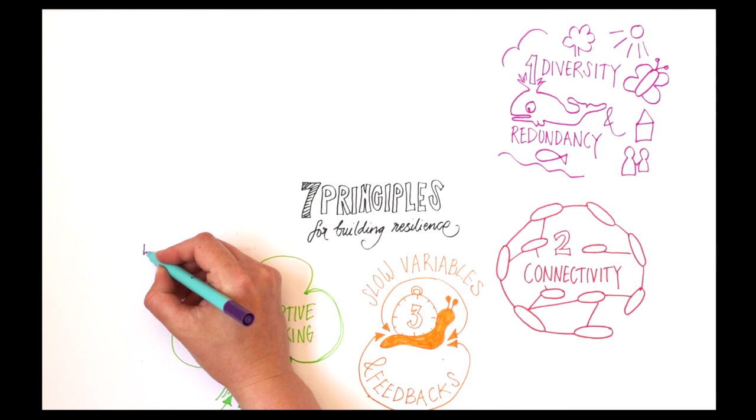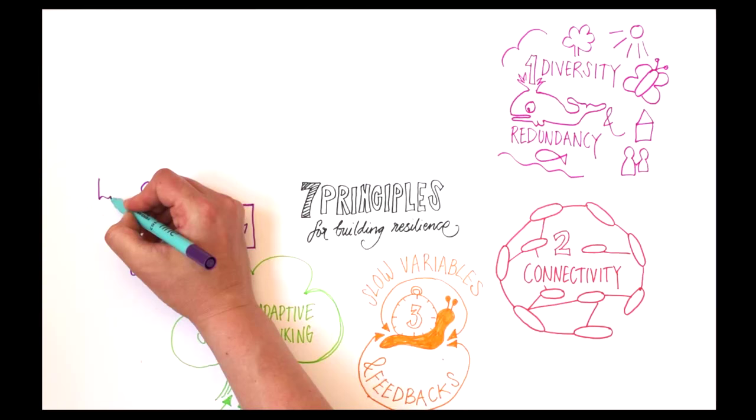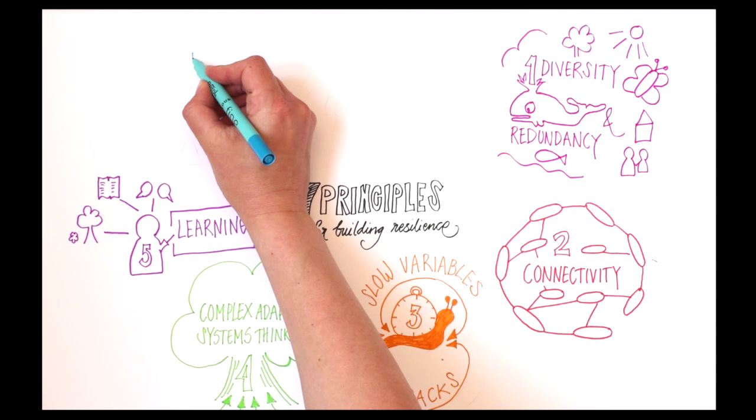Principle 5: Encourage learning. Social-ecological systems are always in development, so there is a constant need to revise existing knowledge and stimulate learning. More collaborative processes can also help.